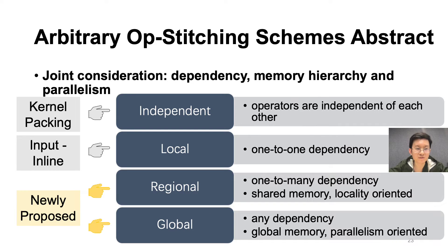The independent scheme is for kernel packing, where operators are independent of each other. The local scheme is just like input inline in existing works and is capable of dealing with one-to-many dependencies. We newly propose regional and global schemes to stitch ops with complex dependencies together. The regional scheme deals with one-to-many dependencies, and the results are maintained on shared memory for better locality — it is locality-oriented. The global scheme deals with any dependencies and is parallelism-oriented.